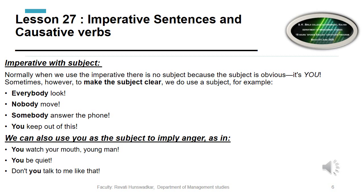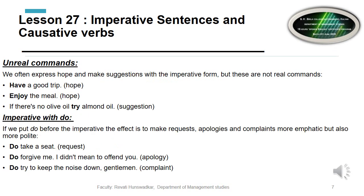'Somebody answer the phone' — if you are busy and your phone is ringing, you tell someone to answer it. 'You keep out of this' — you are telling someone to keep out. We can also use 'you' as the subject to imply anger: 'You watch your mouth, young man,' 'You be quiet,' 'Don't you talk to me like that.' These are imperatives with a subject, used to imply anger or to make the subject clear.